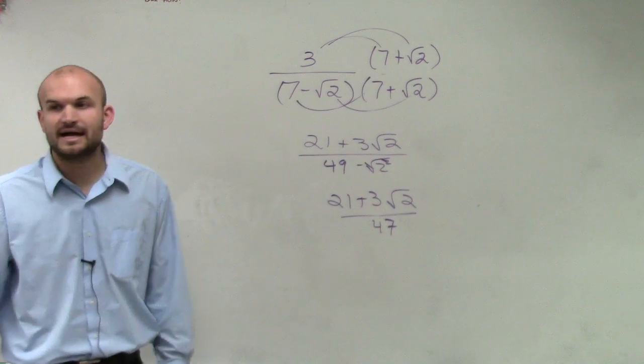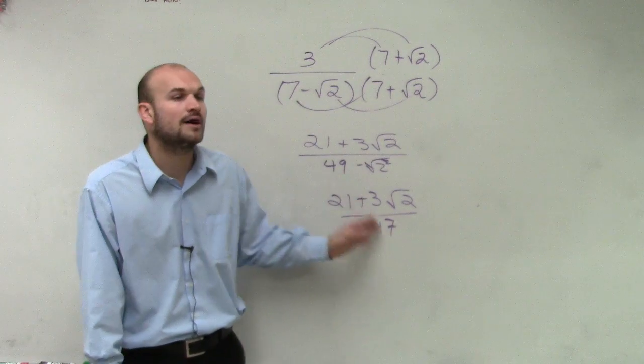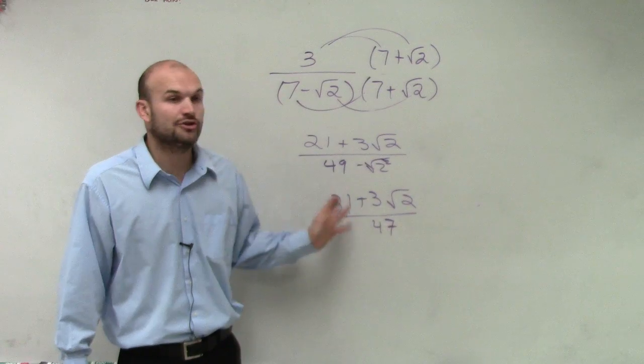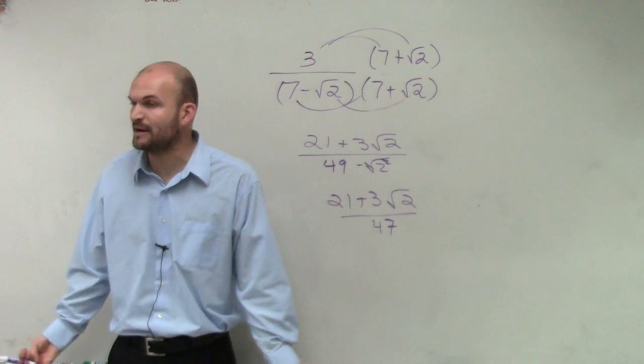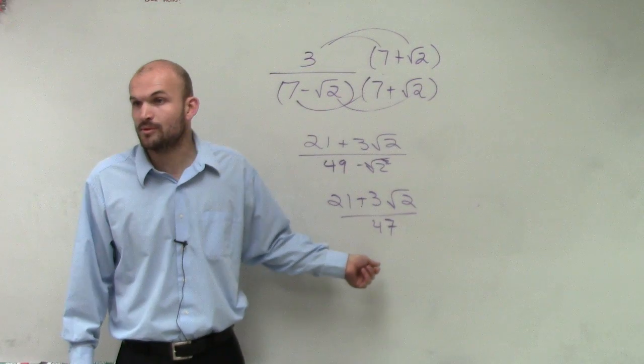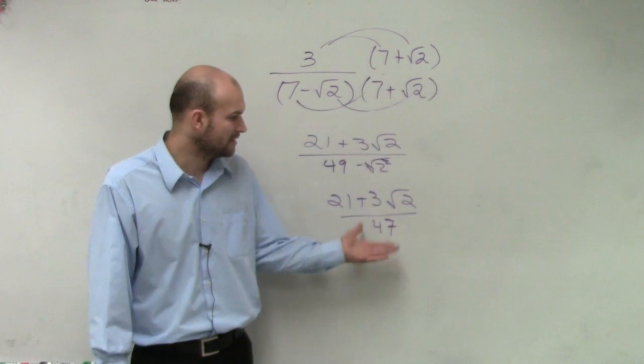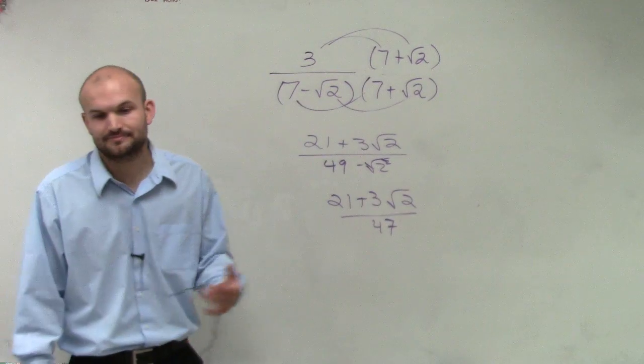All right. Then I look at this and say, is there any way that I can simplify this any further? Is there any number that I can pull out of all of those? Now we know that the numerator is divisible by 3, but is the denominator also divisible by 3? No, that's a prime number. So therefore that is going to be your finalized answer, okay?